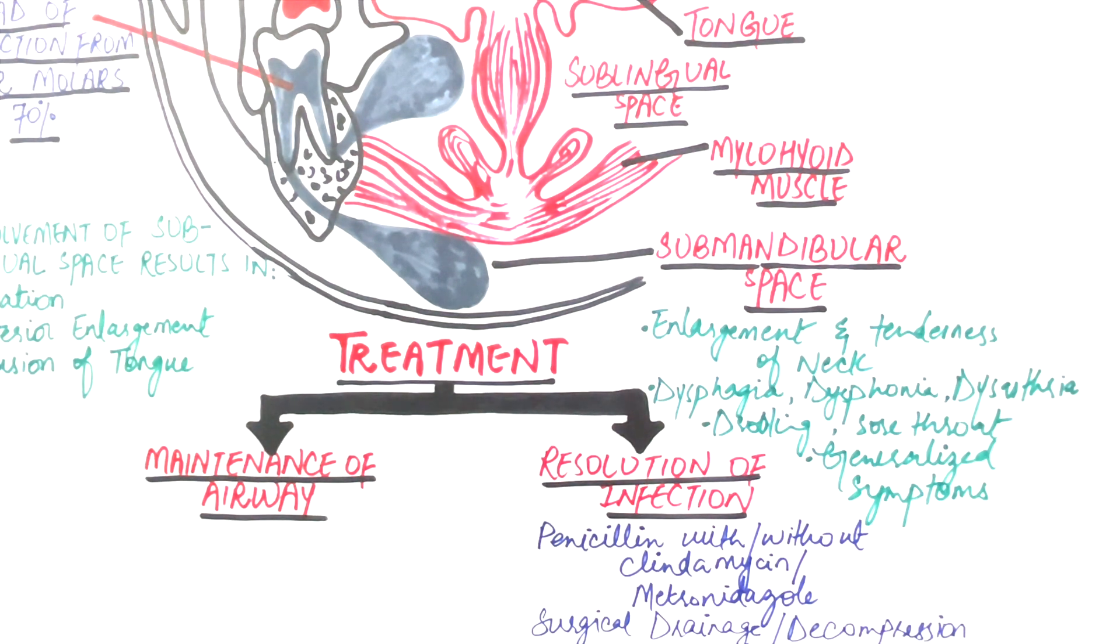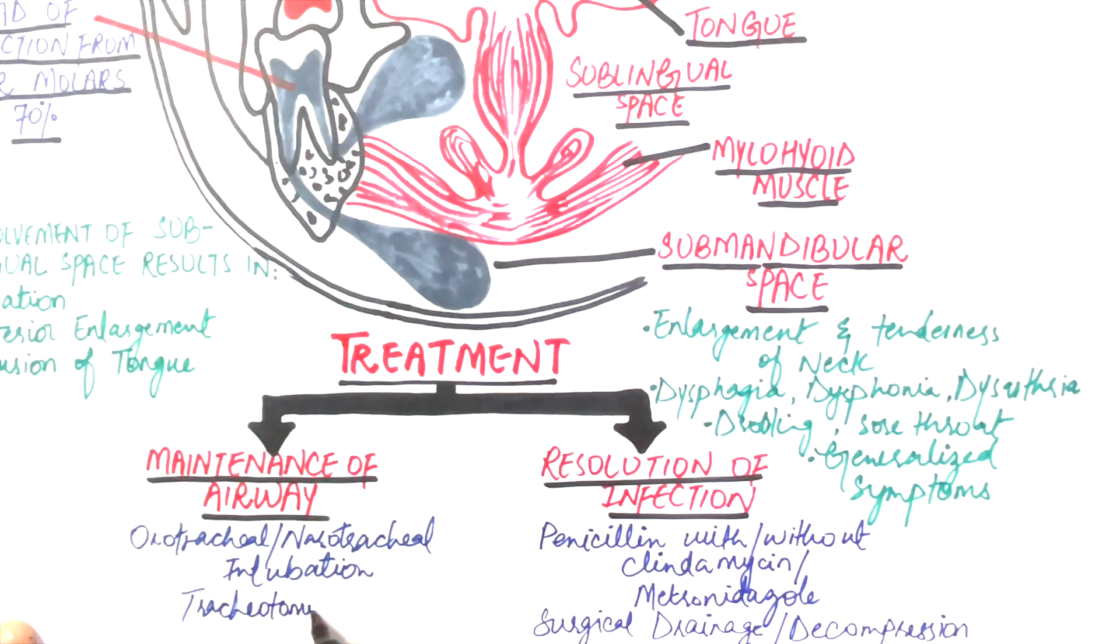The choice of airway maintenance depends on the severity of the airway obstruction. Choices include orotracheal or nasotracheal intubation and tracheotomy. In cases of severe trismus and soft tissue edema in pharyngeal spaces, orotracheal intubation might not be possible.